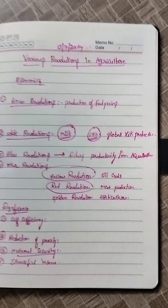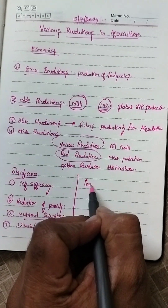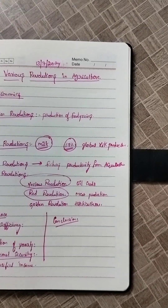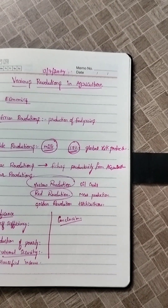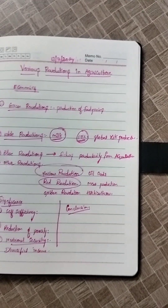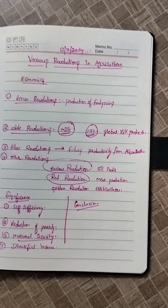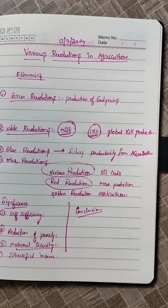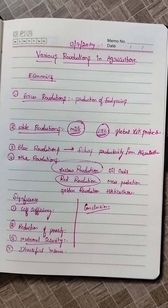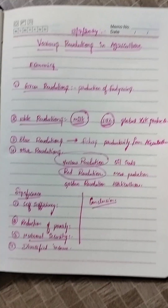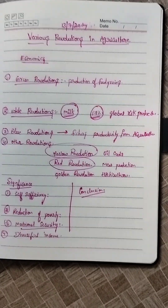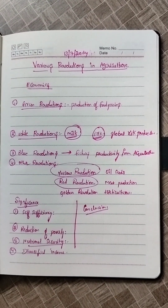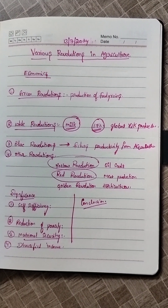In conclusion, these revolutions were separately aimed at long-run achievements, but the government should initiate one revolution focused on all-round concepts. Recently, the government started the Rainbow Revolution. These revolutions have been helpful to poverty alleviation and food security in India. Thank you.